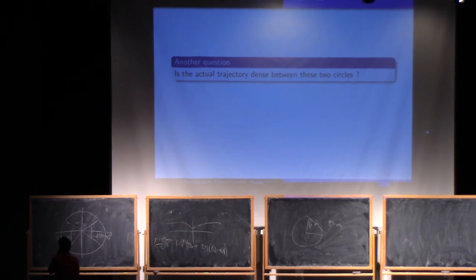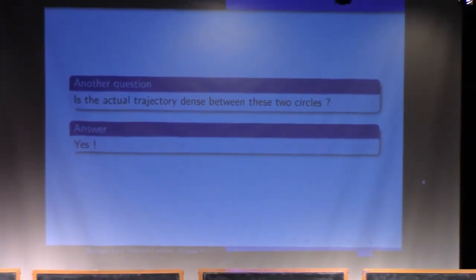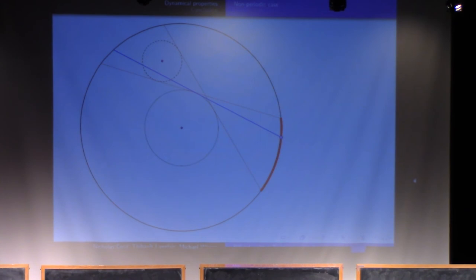But is the actual trajectory dense between these two circles? And this time the answer is yes. Here I take one random point between these two circles and draw an epsilon neighborhood. What are the trajectories for which I can just go into the epsilon neighborhood? Here in the right part of the circle is when, if I bounce in the right part, I'm sure, because of the drawing, that I will go into the epsilon neighborhood. And because my orbit is dense in the circle, I'm sure that I will go there. So basically, I get density.